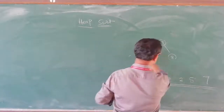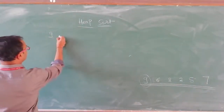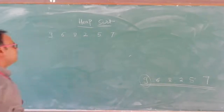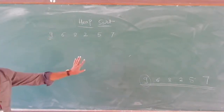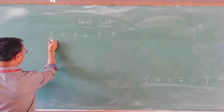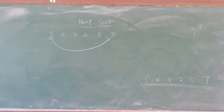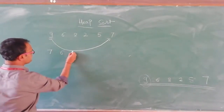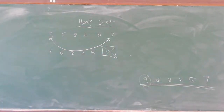Now we are entering the second stage of heap sort with values: 9, 6, 8, 2, 5, and 7. Since the first node in a heap is always the biggest, we send 9 to the last location by swapping. 7 comes to the front: 7, 6, 8, 2, 5, 9. Then 9 is deleted — meaning it is placed at the last position.